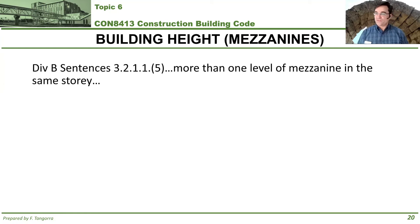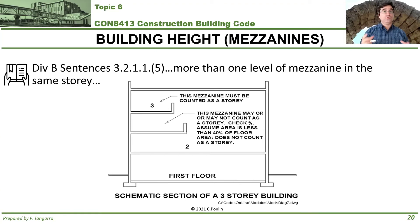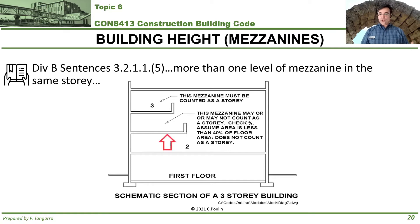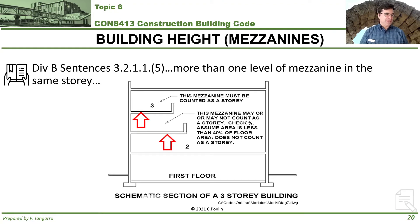Under sentence 5, the building code addresses the possibility of multiple mezzanines on top of each other — multiple partial stories. What it says is that you have to first check the lowest of the mezzanines. That lowest mezzanine may or may not be a story. However, the one above it must be counted as a story. Check it out and you'll see what I mean.